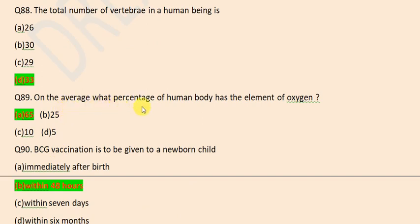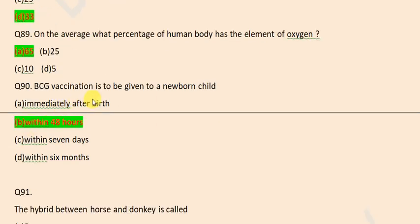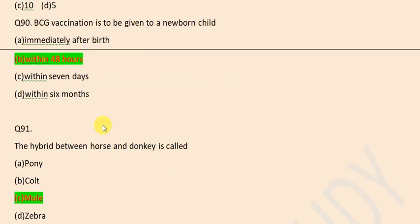On average, what percentage of human body has the element of oxygen? 65%. BCG vaccination is to be given to newborn child within 48 hours. The hybrid between horse and donkey is called mule.